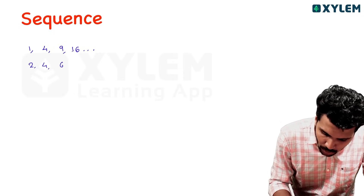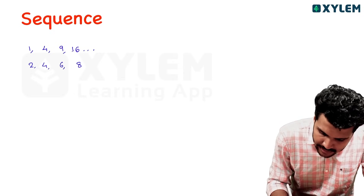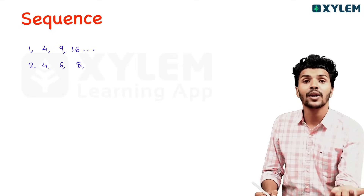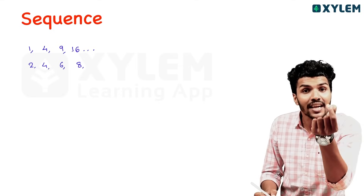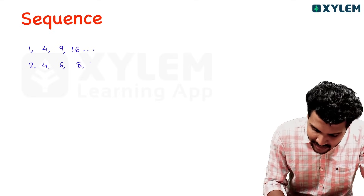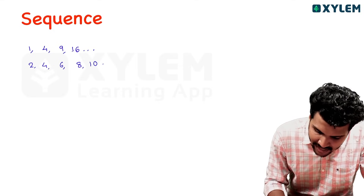Now look at this sequence: 2, 4, 6, 8. What is the next number? That's right — it's 10. These numbers are studied in order.